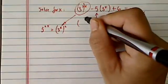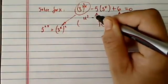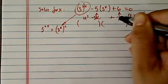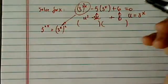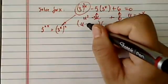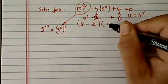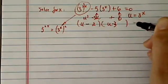Thus, I have u squared minus 5u plus 6. That's easy to factor: u minus 2, times u minus 3, equals 0.